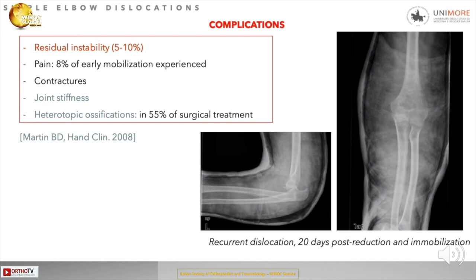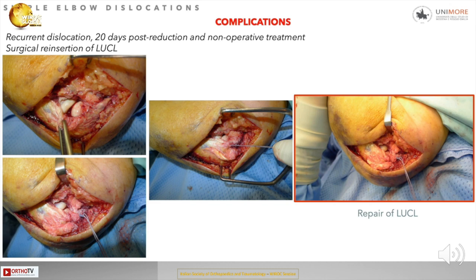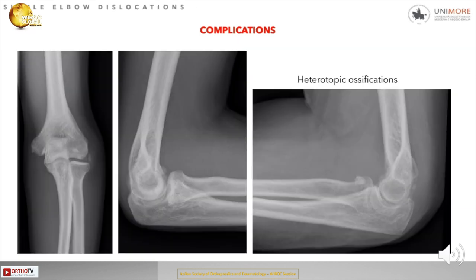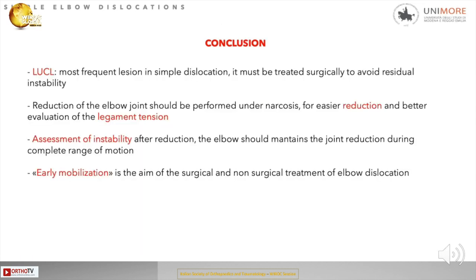It is important to discuss complications. Residual instability is the most significant complication, reported in about 5–10% of cases in the literature. Pain is reported in up to 80% with early mobilization, and contractures and heterotopic ossification are other known complications. Here is a case of recurrent instability after 20 days with dislocation in a cast, where surgery was performed to reattach the lateral ulnar collateral ligament. Another complication shown is heterotopic ossification on the lateral side adjacent to the radial head.